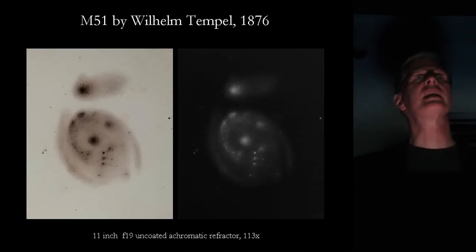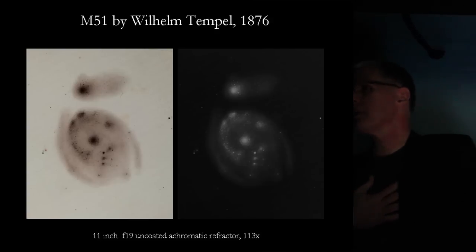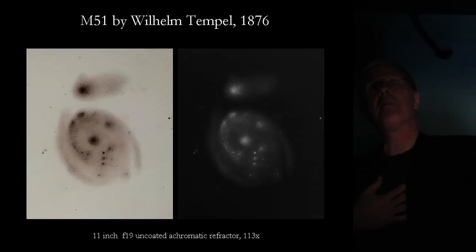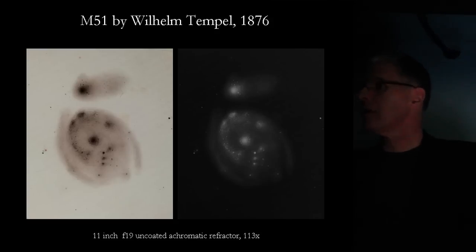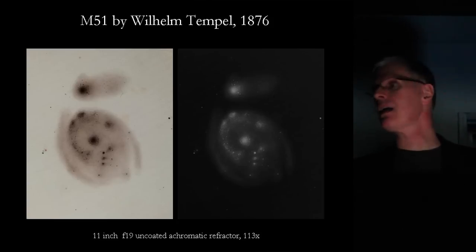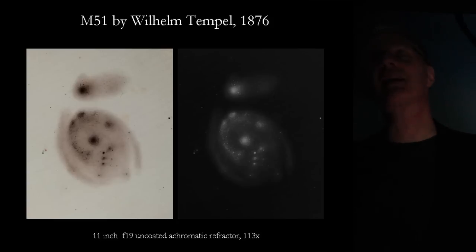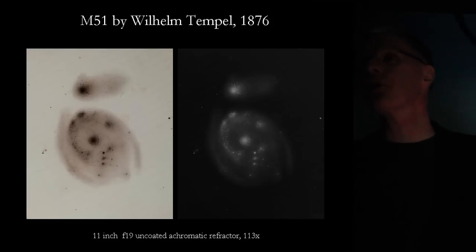This is Temple's best drawing, made at 113 power with his one eyepiece. Looking at it, I said that's not a convincing drawing to show it's not a spiral — there are certainly curvy, loopy structures in there. Strictly speaking, it does not copy what Lord Ross had drawn, which many other observers had been doing. It does give a pretty good idea of what a modest 11-inch refractor could show, because the spiral structure in M51 is not that obvious in a telescope of this size.